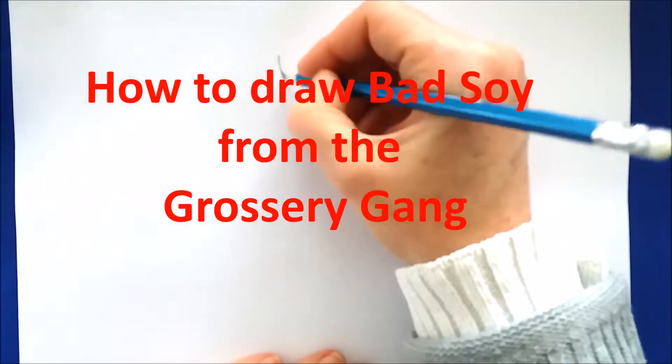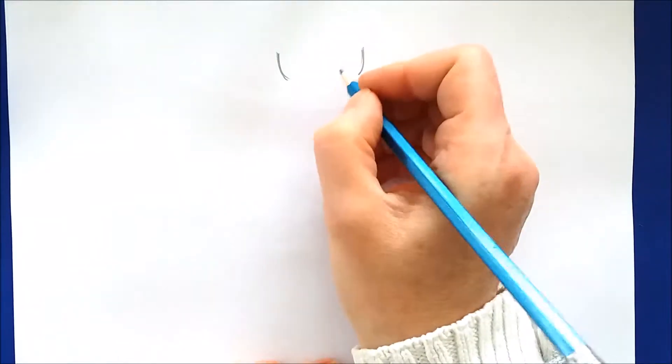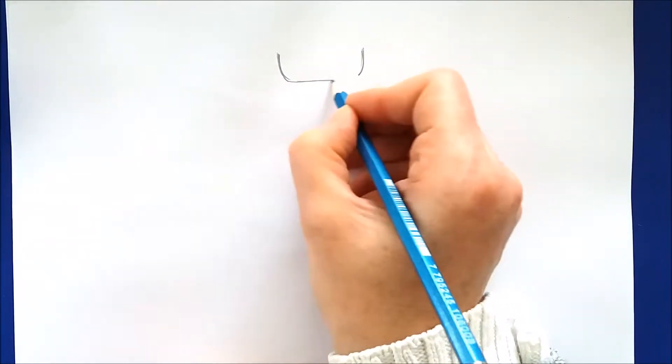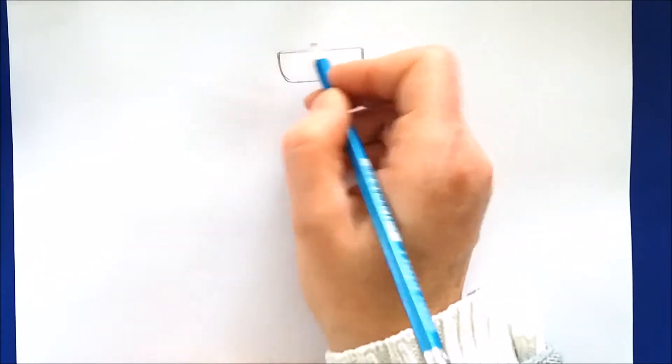Welcome back everyone. Today we are going to be drawing Bad Soy from The Grocery Gang. So let's begin by drawing a rectangle at the top of our piece of paper. This is the cap of Bad Soy's bottle.